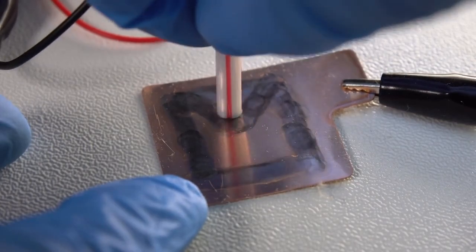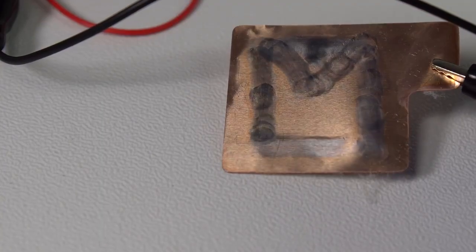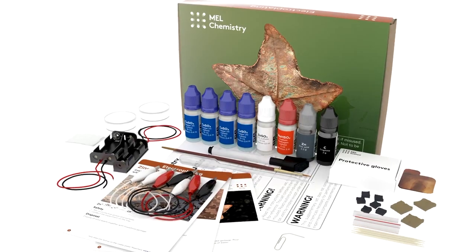As zinc ions arrive at the surface of the copper plate, they add two electrons and settle on it as a form of metal layer.